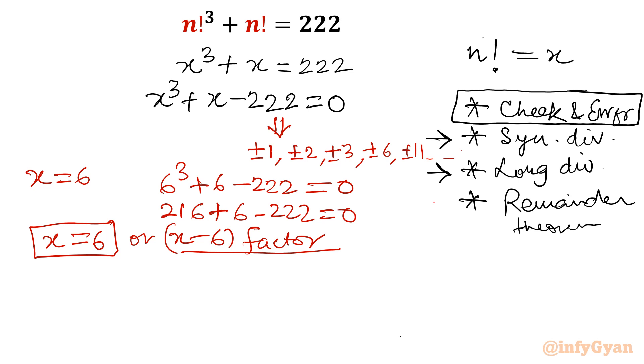So that means x equal to 6 is one solution or root, or x minus 6 is one factor of the cubic polynomial. So let me begin. Check and error method is verified. You can check using different numbers if you want.